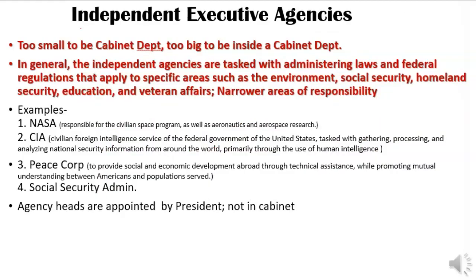Number three is the independent executive agencies — agencies that were not big enough to be a cabinet department but too big to fit within one. They tend to have a much narrower focus than a cabinet department. NASA, for instance, is only about space exploration — too big to fit inside the Department of Defense or Transportation, but too small to be a cabinet department. The CIA, Social Security Administration, and Peace Corps are also in this category.